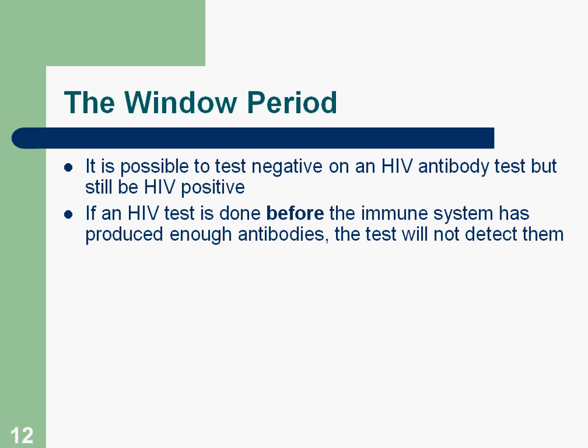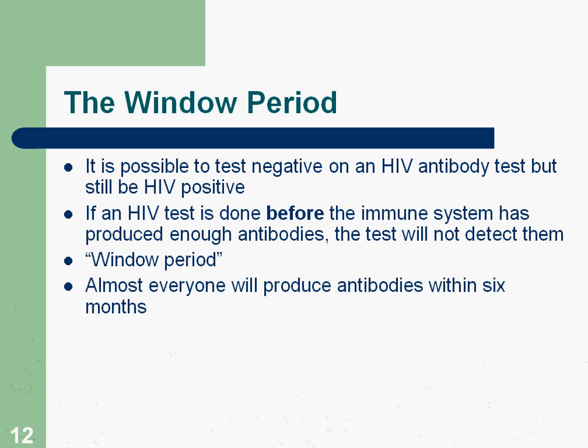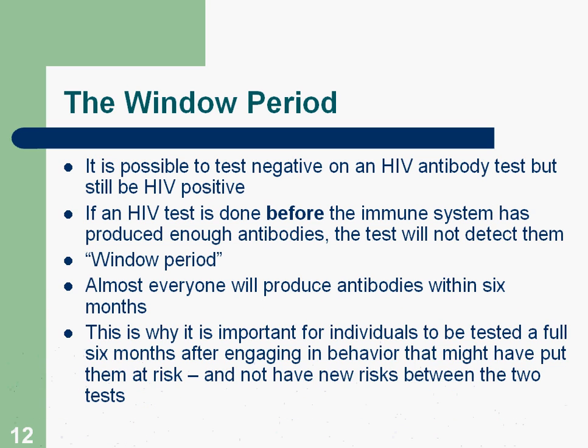If the HIV test is done before the immune system has produced enough antibodies, the test will not detect them. Almost everybody produces antibodies within six months, which is why it's important for individuals to be tested a full six months after engaging in any behavior that might have put them at risk, and not have new risk between the two tests. I will see you in part two of this presentation.